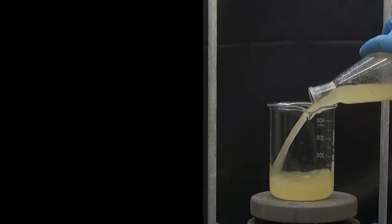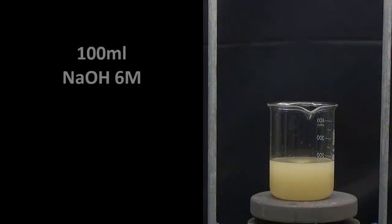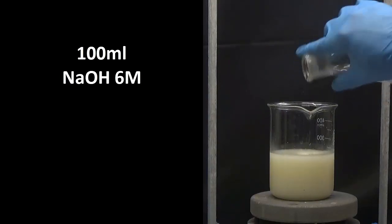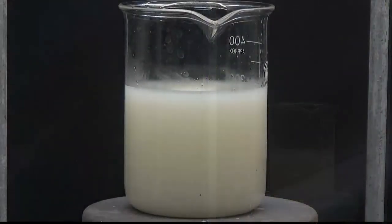Place the filtrate in a 400 milliliters beaker and add 100 milliliters of 6 molar sodium hydroxide solution. A white precipitate is formed that is possibly zinc hydroxide.